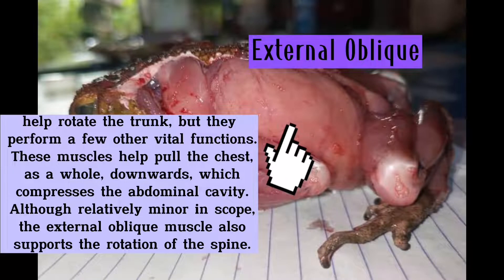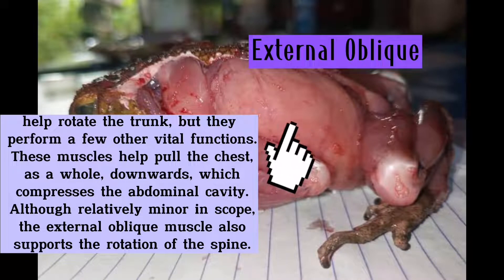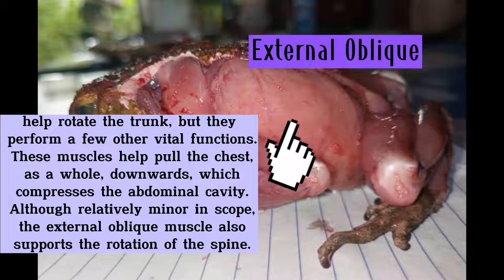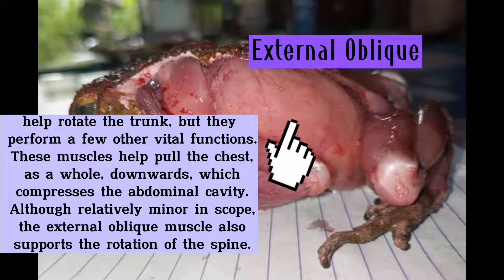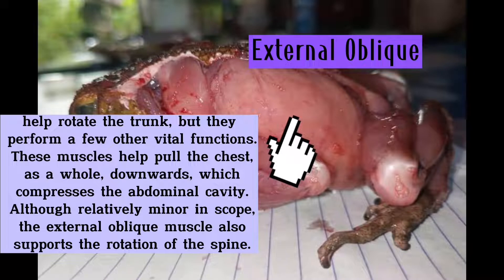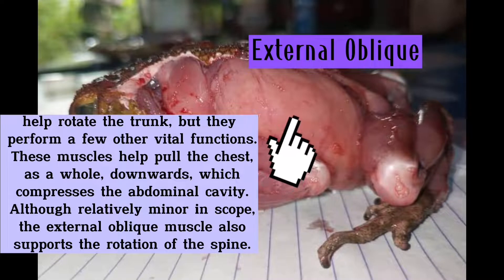The external oblique functions to help rotate the trunk but also performs a few other vital functions. These muscles help pull the chest downwards, which compresses the abdominal cavity. Although relatively minor in scope, the external oblique muscle also supports the rotation of the spine.